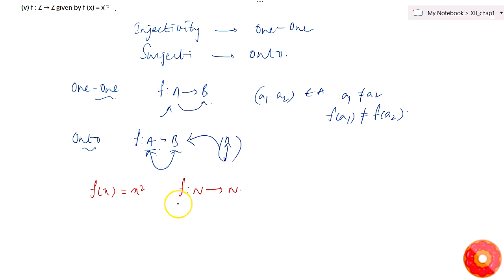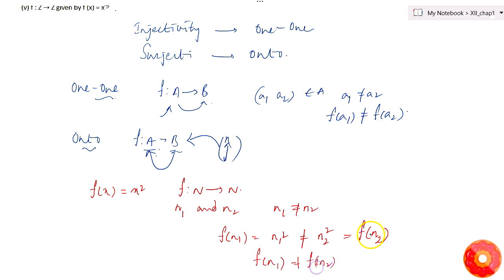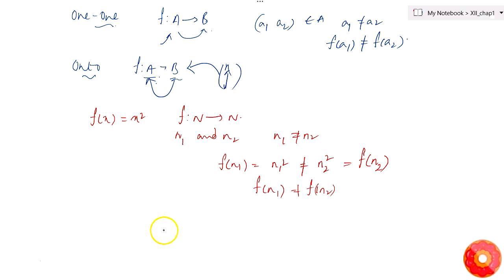Let's take any two different natural numbers n1 and n2 such that n1 is not equal to n2. Then f(n1) = n1² which is surely not equal to n2² = f(n2). So f(n1) is not equal to f(n2), which means the given function f is one-one in nature.